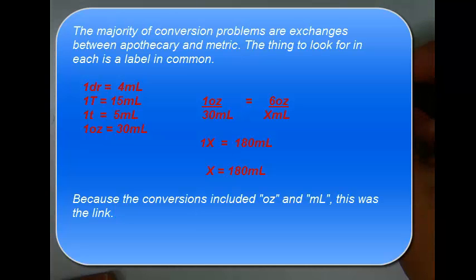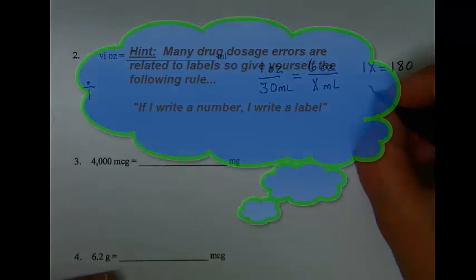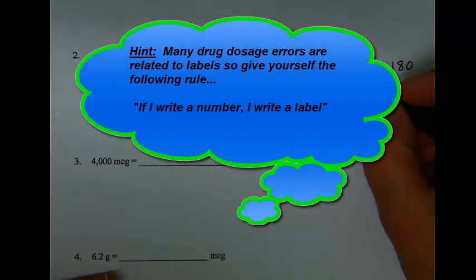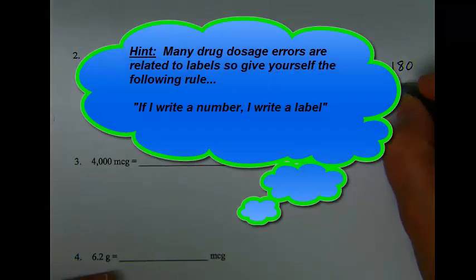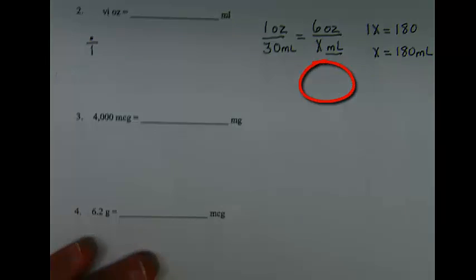1 times x is 1x, and 6 times 30 is 180, so x is equal to 180. X was milliliters.